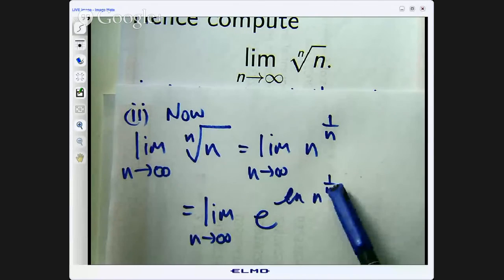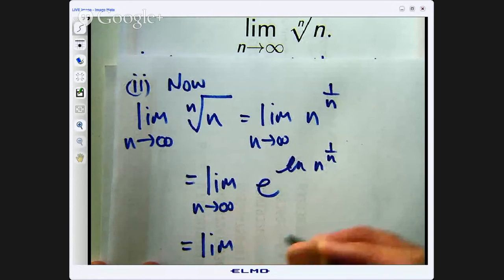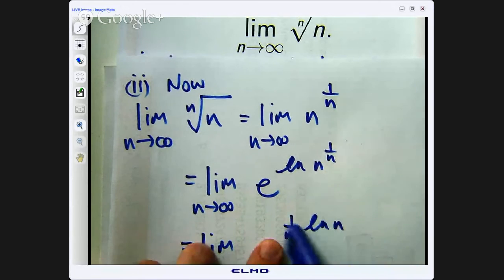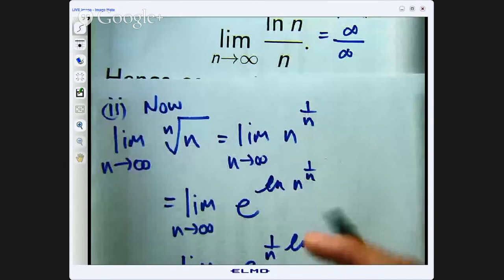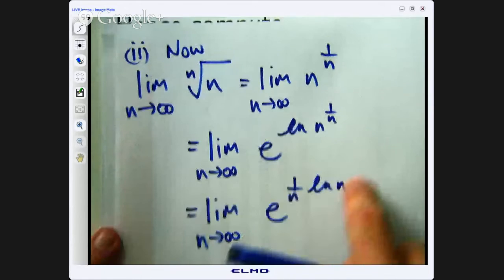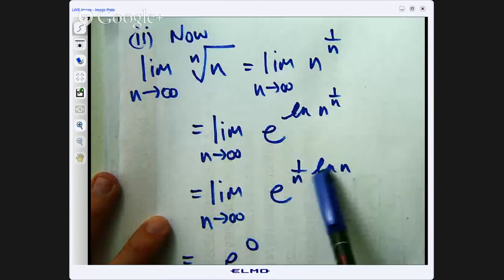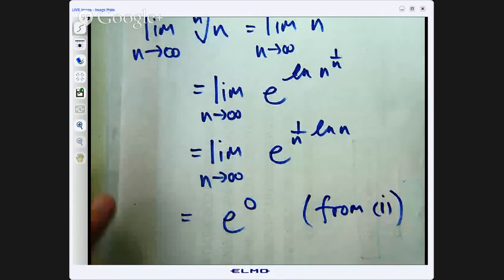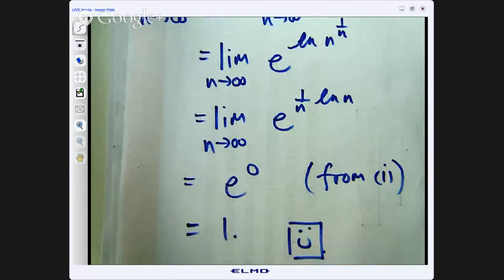Okay, so what we can do down here is use log laws. This 1/n can come to the front. So I am going to get e to the 1/n log n and this exponent is the same thing that we calculated up here. So we want to calculate this and I can move that limit up to the exponent. So the limit of the exponent is 0 from part 1. So the limit has been taken up there and it is e to the 0 from part 1 and e to the 0 is just 1.